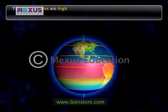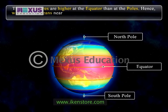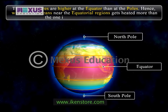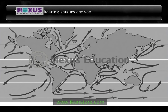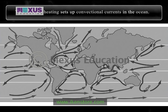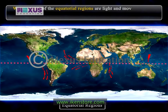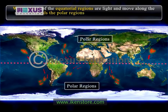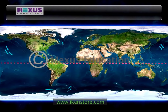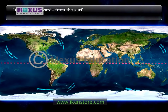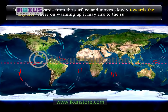The temperatures are higher at the equator than at the poles, hence water in the oceans near the equatorial regions gets heated more than that near the poles. This unequal heating sets up convection currents in the ocean. Warm waters of the equatorial regions are light and move along the surface towards the polar regions, where they cool. Cold water is dense and heavy; it sinks downwards from the surface and moves slowly towards the equator, where on warming up it may rise to the surface again.